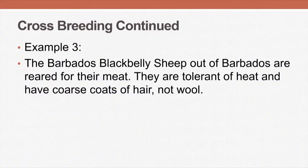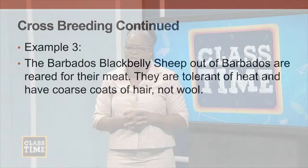The next example is the Buffalypso out of Trinidad and Tobago. This breed was developed by crossing different breeds of river buffalos. The resulting meat is of a higher quality than the top cuts of prime beef, and breeding stock have been exported to other Caribbean countries. The final example is the crossing of sheep in Barbados to give us the Barbados Black Belly sheep. These animals are tolerant to heat, have a coarse hair, and do not have wool.